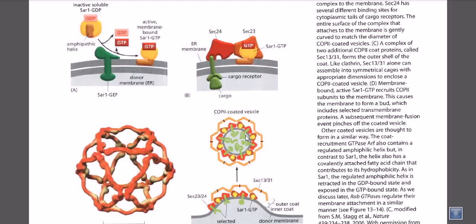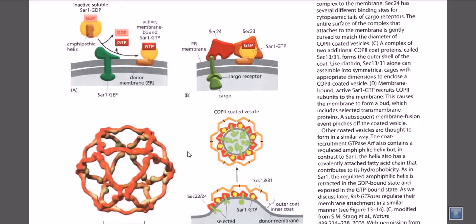The properly formed vesicle is pinched out from the endoplasmic reticulum and we have the COPII coated vesicle, which is destined to deliver towards the cis-Golgi network for further processing, and finally the protein will be destined to its destination point. This is the 3D structure of the COPII vesicle-associated protein — a structure like an icosahedron, though not perfect icosahedral symmetry, but a very good representation of how the coat looks. It's a bulkier, physical structure.